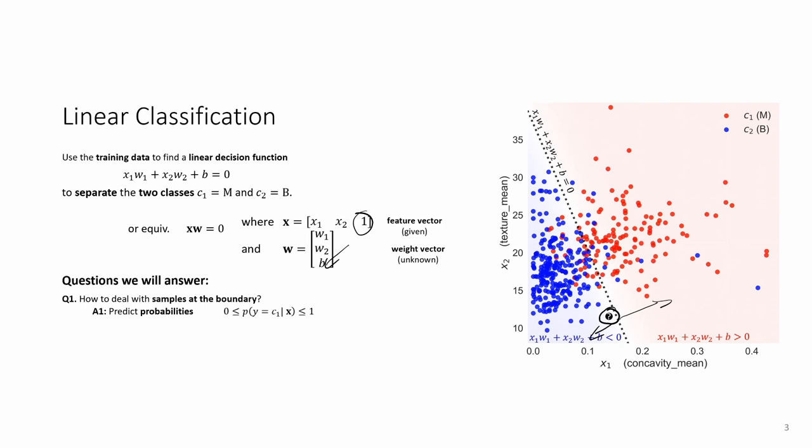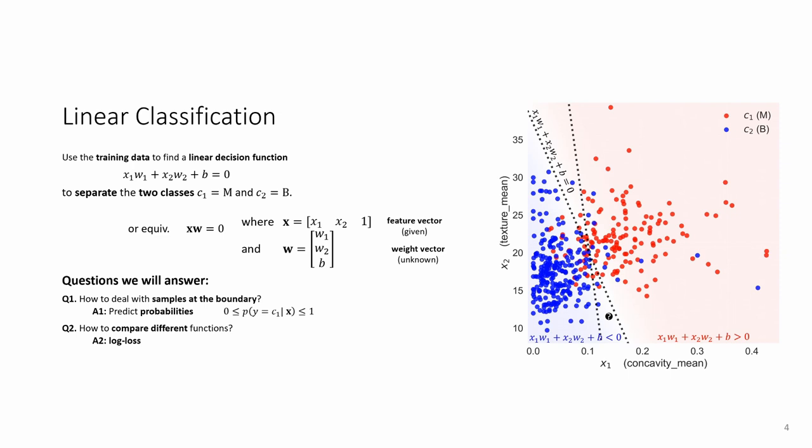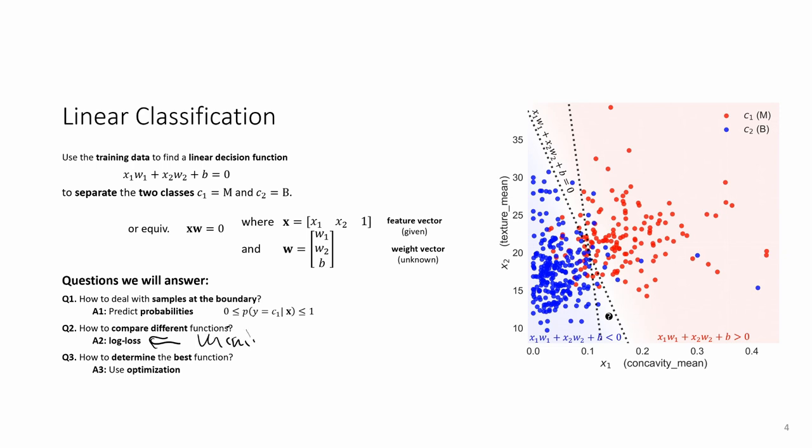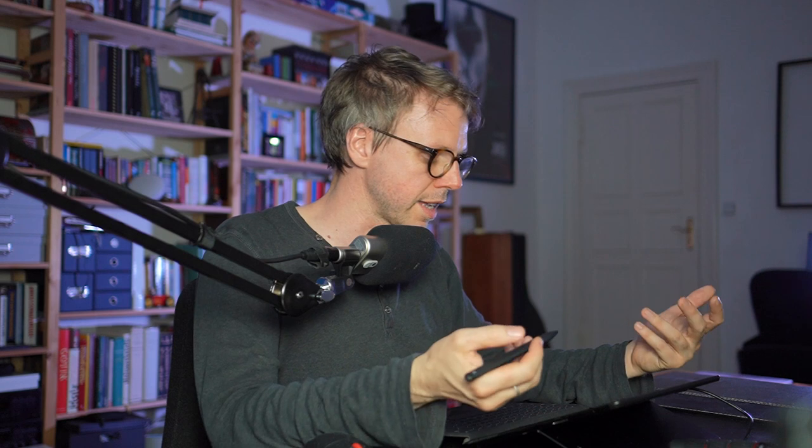We will use a model that allows us to predict probabilities for belonging to a given class. The second question is how to do optimization — we need a way to score different models, so we need a loss function. For that we will look at the so-called log loss function. We will see that the log loss function, similar to the squared loss in linear regression, corresponds to a likelihood model. Once we have such a loss, we use optimization to minimize the loss, or equivalently maximize the log likelihood. We will also discuss a few quality metrics to assess the classifier performance.